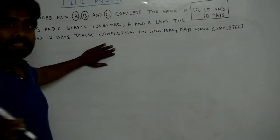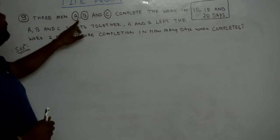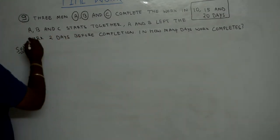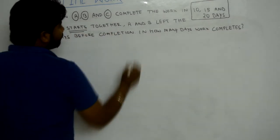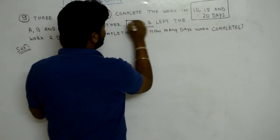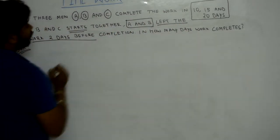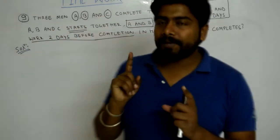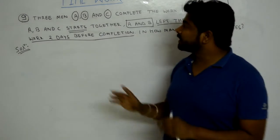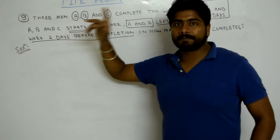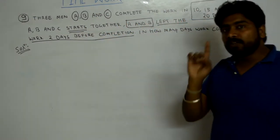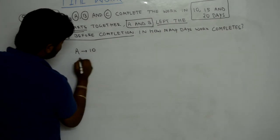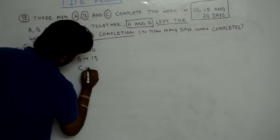This is a similar type of question. Three men A, B and C complete the work in 10, 15 and 20 days. A, B and C start together, but A and B left the work two days before completion. So in the last two days, only C worked.